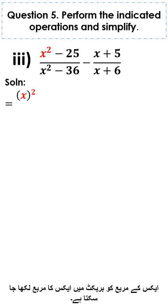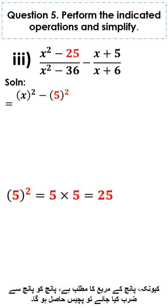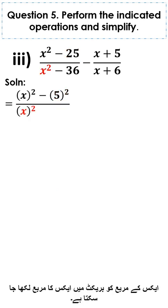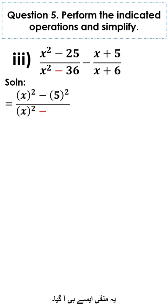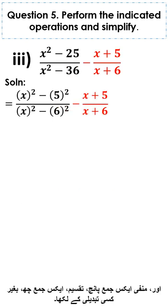x square can be written as x square; 25 can be rewritten as 5 square because 5 multiplied by 5 is 25, divided by x square minus 36 which can be rewritten as 6 square because 6 multiplied by 6 is 36. And minus x plus 5 divided by x plus 6 is written without any change.